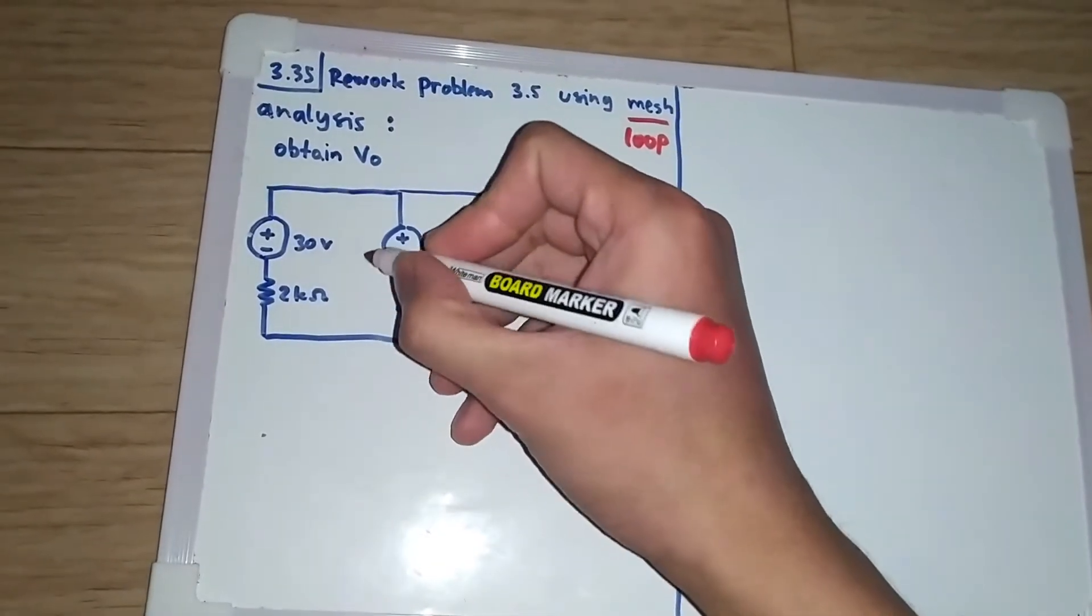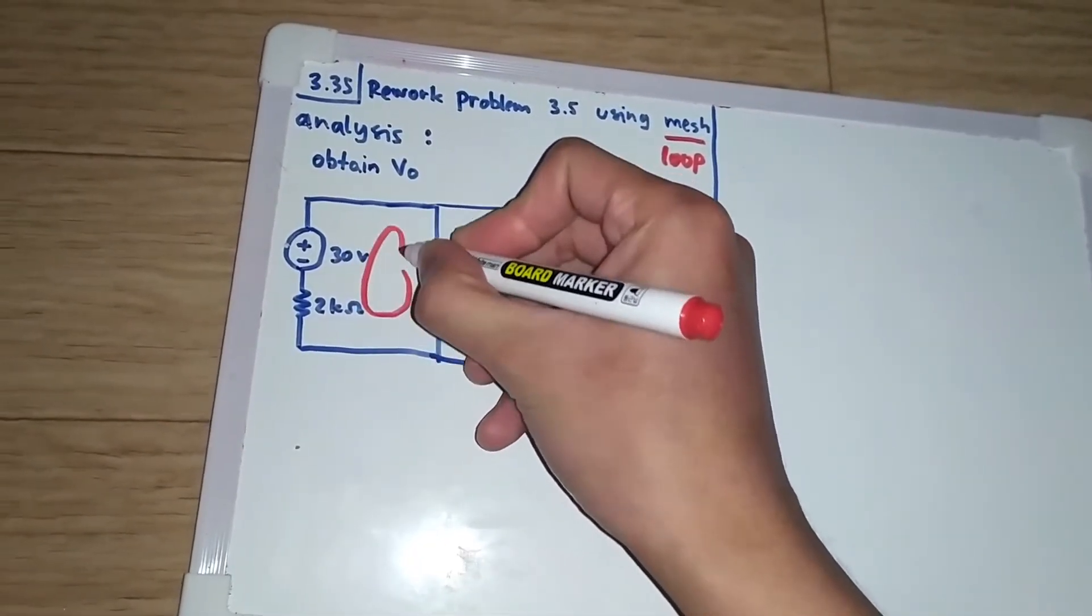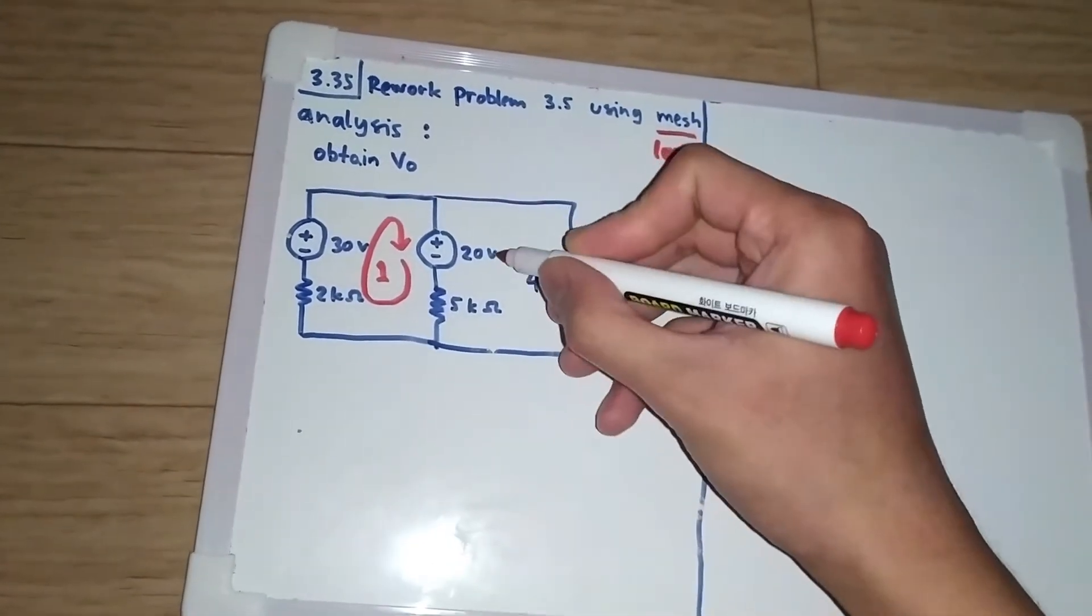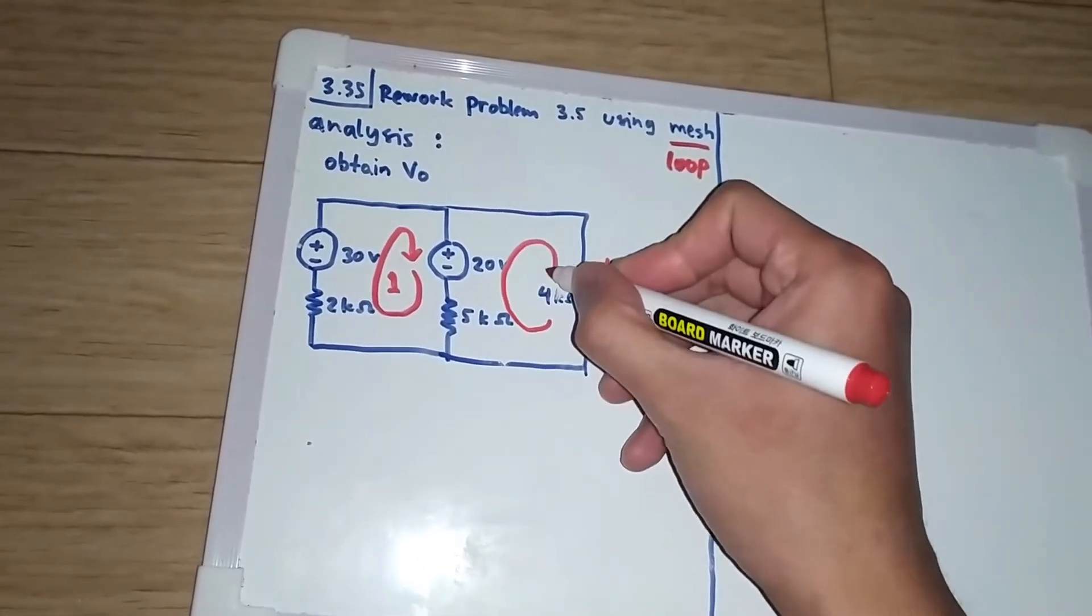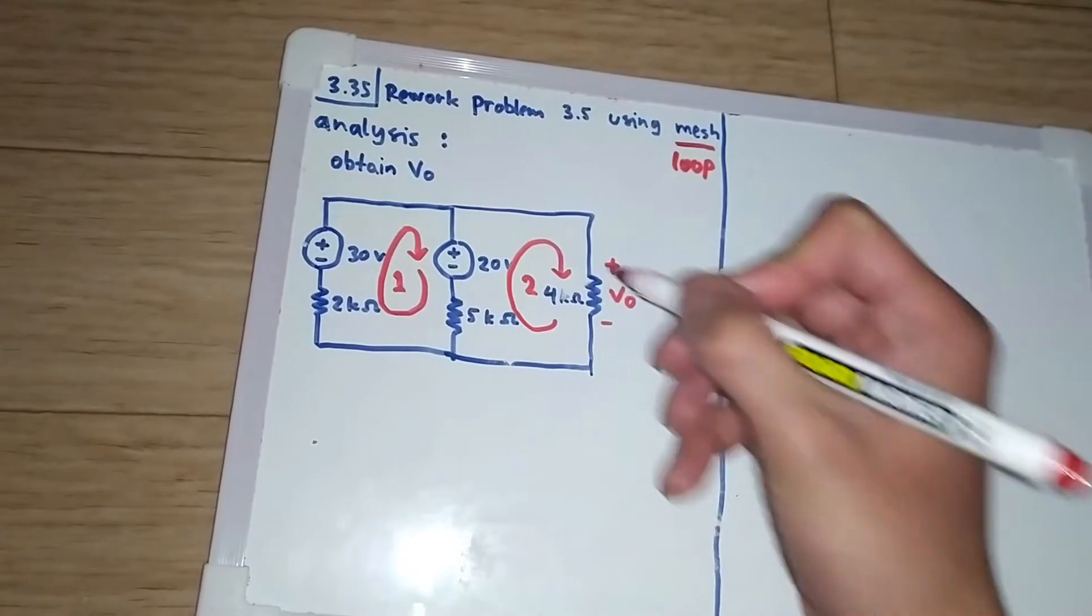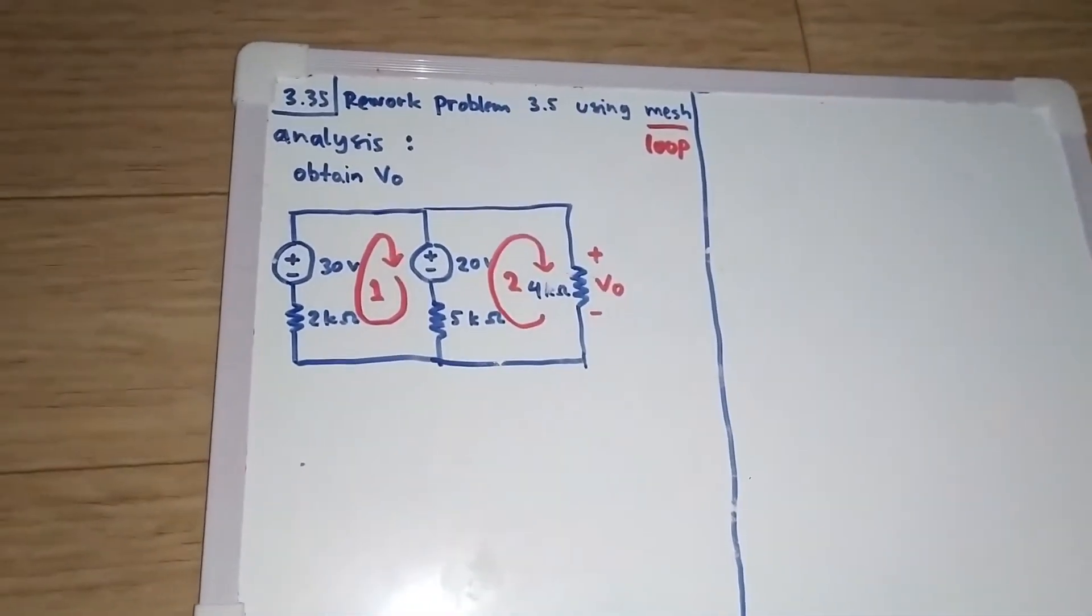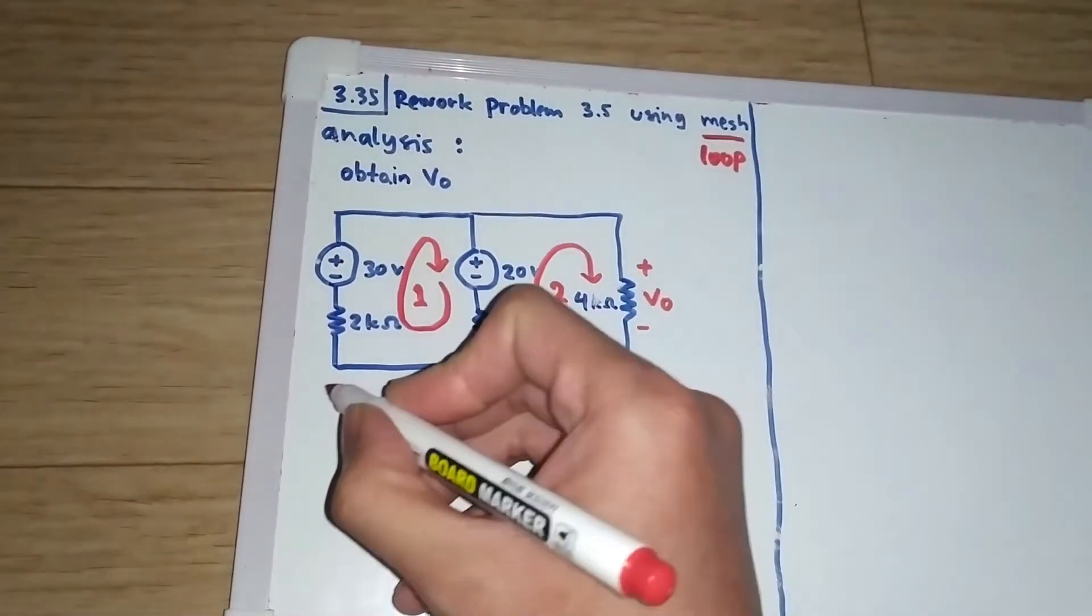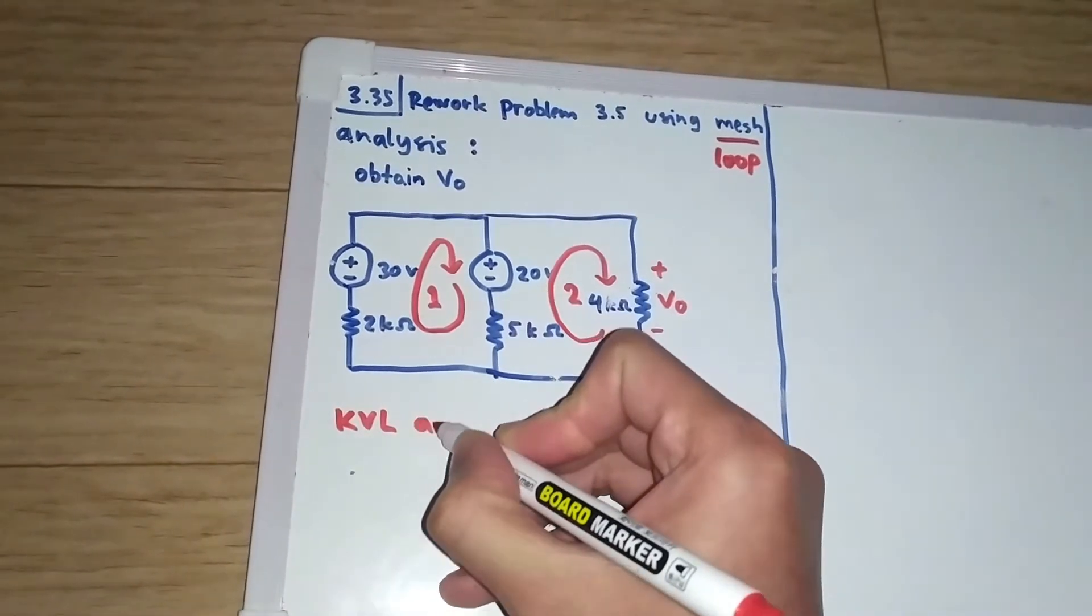Let's start. Because we are using loop analysis, we need the loops. I will draw the loop here, this is loop number one, and on this part I will name this loop as loop 2.